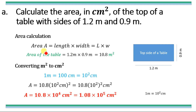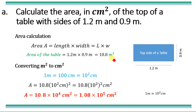We know that the area of a rectangular shape is length multiplied by width. The length of this table is 1.2 meters and the width is 0.9 meters. Simply multiplying these two terms, we get 1.08 meter square. So the area of the table is equal to 1.08 meter square.